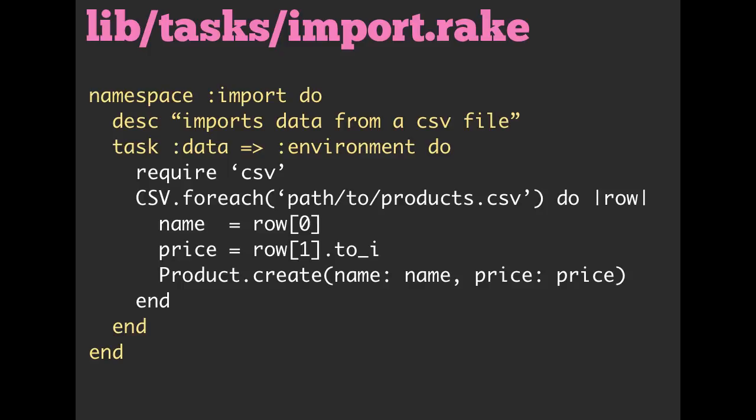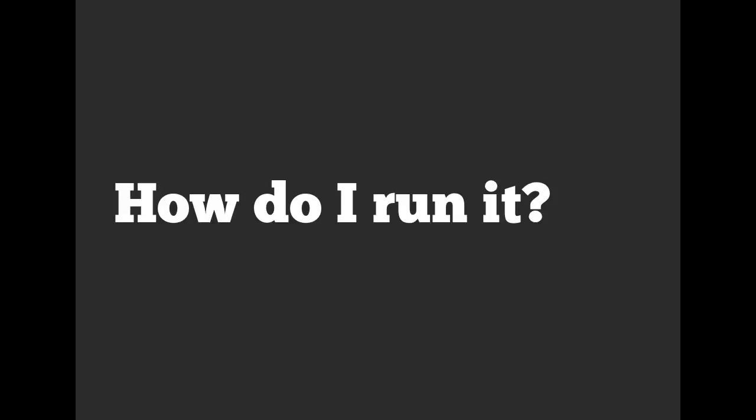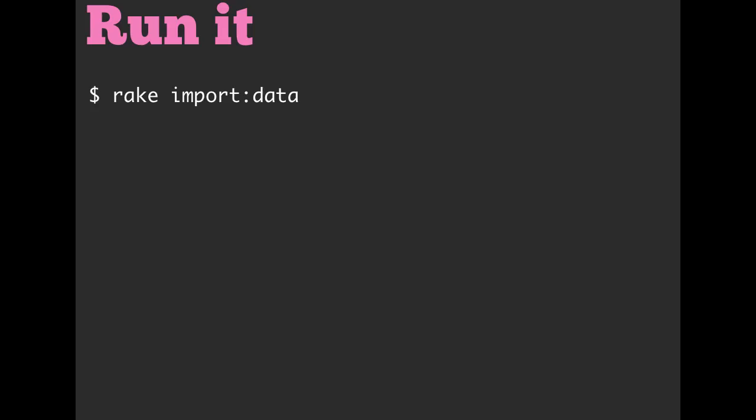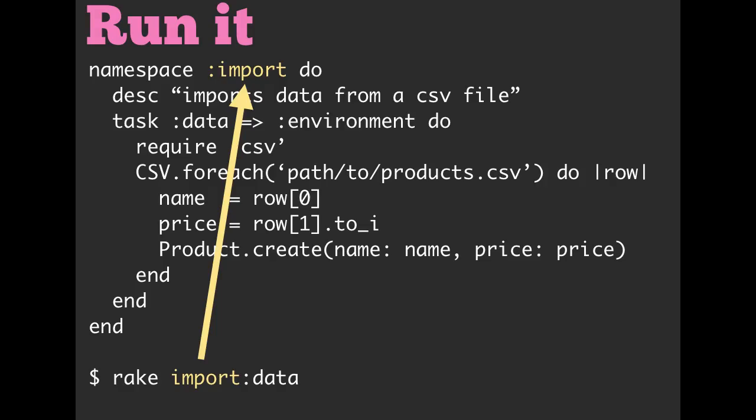Now we've got our Rake task built — a namespace of import, a task name of data, and all our code inside. How do you actually run it? You run rake import:data. We get "import" from the namespace, then a colon, and the task name is "data". This is how we differentiate different Rake tasks. In the past you've run rake db:migrate — "db" is actually a namespace and "migrate" is the actual task name.